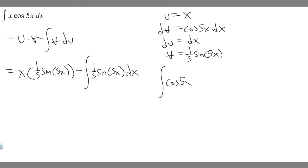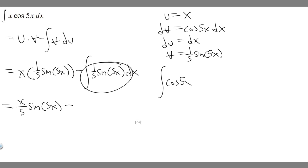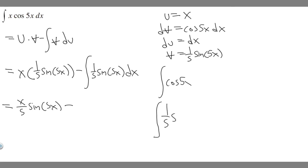We know du is just dx. So to solve this integral, we just need to find the integral of this now. Combining terms, it's going to be x over 5 times the sine of 5x minus the integral of 1 over 5 times the sine of 5x dx. You can use u-substitution again, or think through it. We're going to set u equal to 5x.